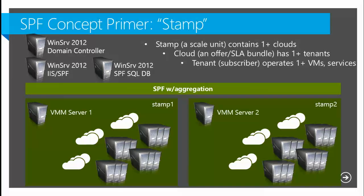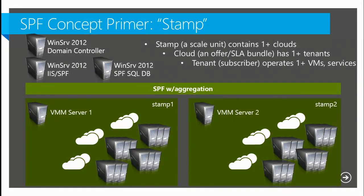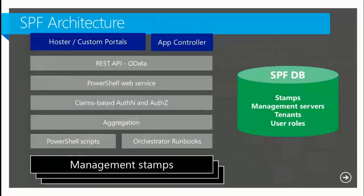A question on how SPF knows which VMM server to route to: in the SPF database we track tenancy and have a mapping between all the tenants we know about and the servers in the back end. The whole goal is that nobody at the consumer level has to worry about where they live. The cloud abstraction acts as an opaque wall that they can't see past.